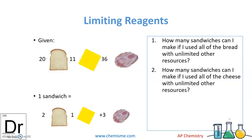To get that, we need to understand something called limiting reactants, or limiting reagents. You've actually already done this before. I'm going to start with a real-world example, and then we're going to do a chemistry example.